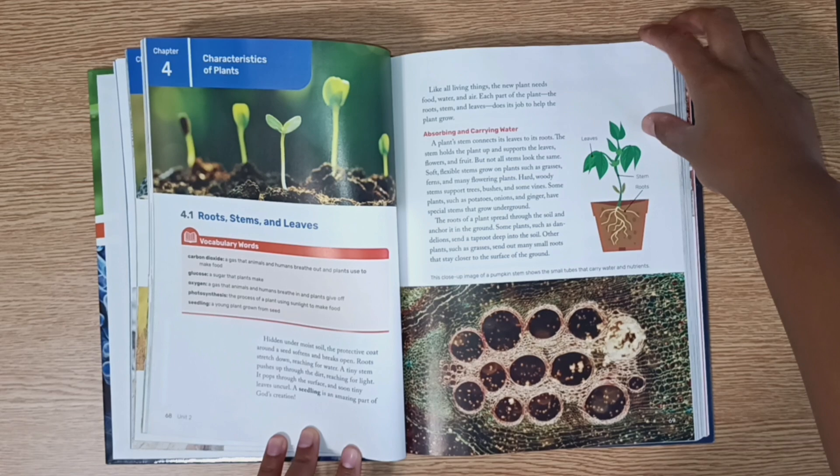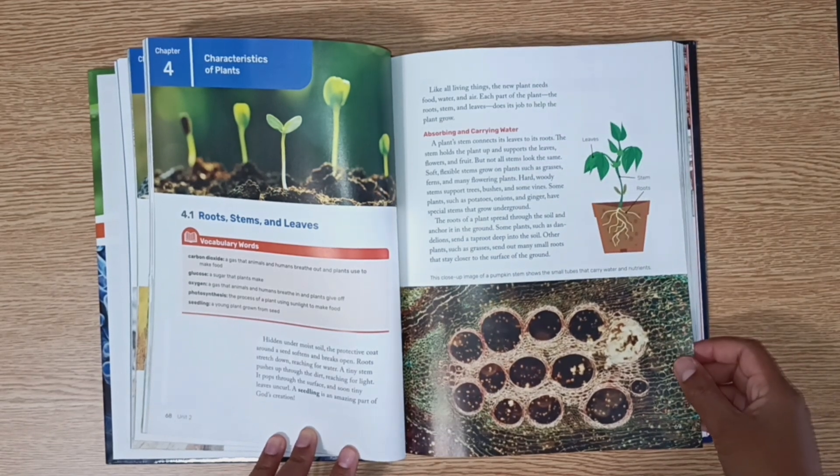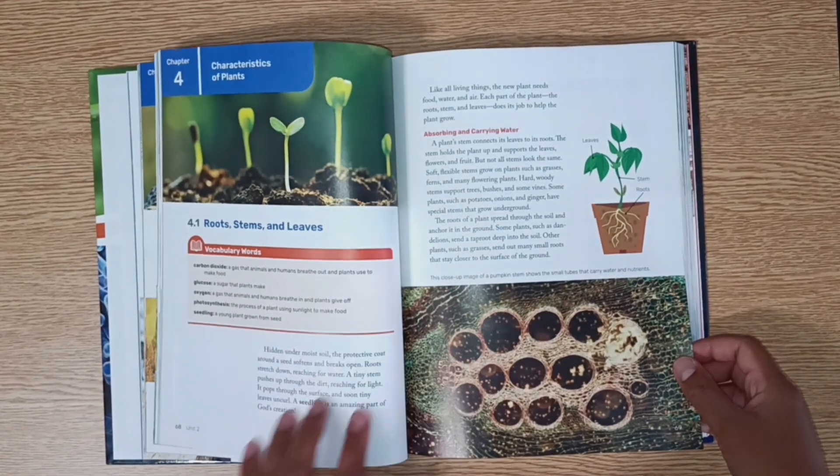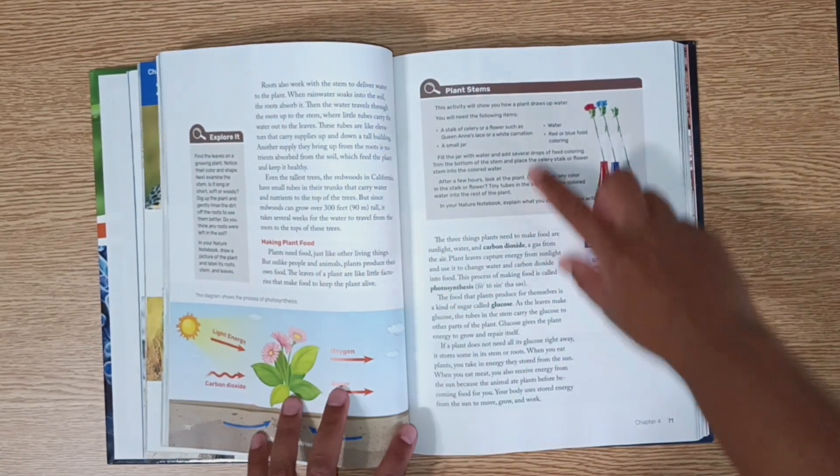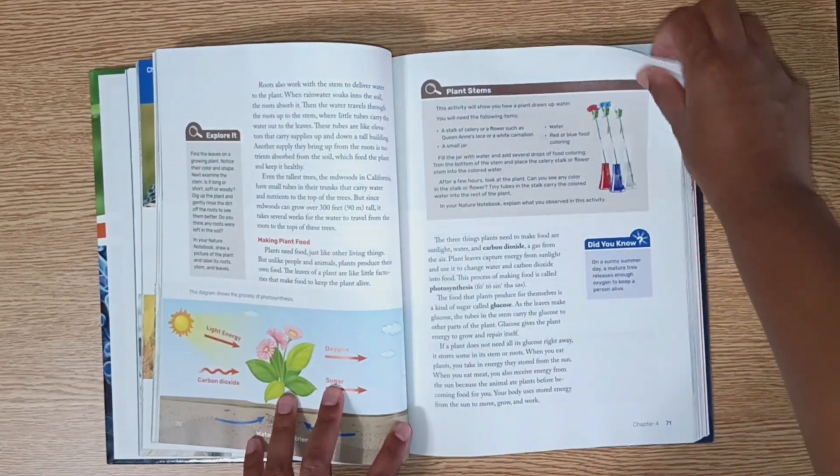This chapter 4 is on the characteristics of plants. You have your vocabulary words. It talks to you about absorbing and carrying water. It's full color, and then there's also an activity here to do.